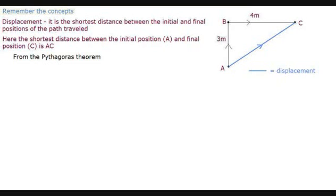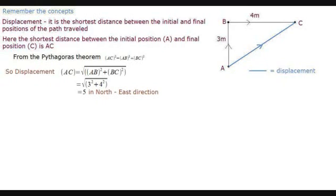From the Pythagoras theorem we get AC square is equal to AB square plus BC square. Hence AC equals square root of 3 square plus 4 square which equals square root of 25. Hence displacement AC is equal to 5 meters.